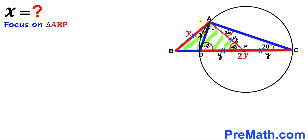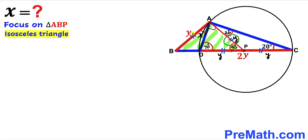Now let's focus on triangle ABP. This is also an isosceles triangle since side AB has length Y and side AP has length Y as well. Therefore, the angle at B is congruent to the angle at A, which is 40 degrees, so this angle is 40 degrees as well.